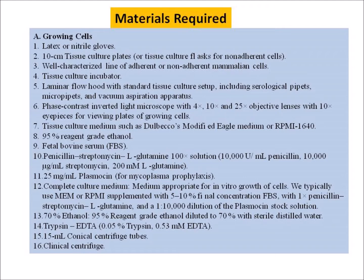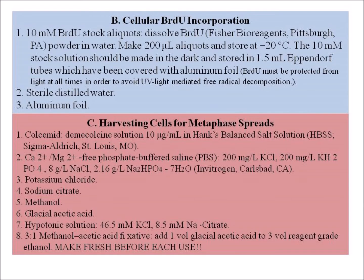Additional materials include 70% ethanol, trypsin, 15 ml conical centrifuge tubes, and a clinical centrifuge. For cellular BrdU incorporation, sterile distilled water and aluminium foil are required. For harvesting cells for metaphase spread: colcemid (demecolcine) solution at 10 mg/ml in Hanks' Balanced Salt Solution, calcium- and magnesium-free phosphate buffered saline (PBS), potassium chloride, sodium citrate, methanol, glacial acetic acid, hypotonic solution, and 3:1 methanol:acetic acid fixative.